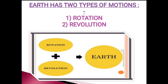Similarly, we are also moving with our earth, but the sun and other stars are fixed. So, in this chapter, we will study about the two types of simultaneous movements of the earth. These two movements are rotation and revolution.